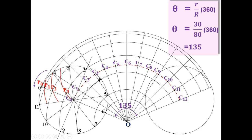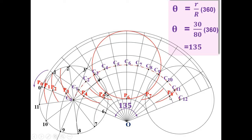With C4 as the center, draw the arc on the arc passing through point number 4. With C5 as the center, draw the arc on the arc passing through point 5. At P6, draw the circle which will cut on the center line. Continue similarly through C7, C8, and up to C11 as center. At last, P12 is located. Join all the points with a smooth curve to get the hypocycloid.